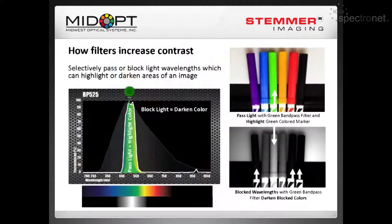The concept of filtering is pretty simple. In a monochrome camera or a monochrome image, if we want to highlight a color, we want to pass that wavelength. If we want to darken it, we want to block that wavelength. So here, we pass the green wavelength — we can pass the green marker in a monochrome image and highlight that.